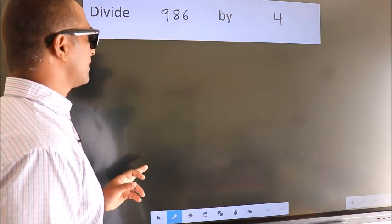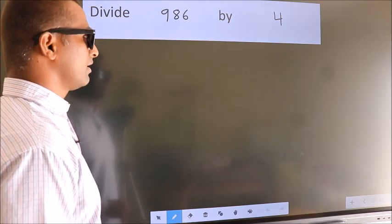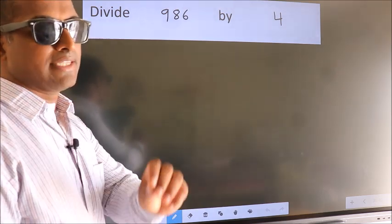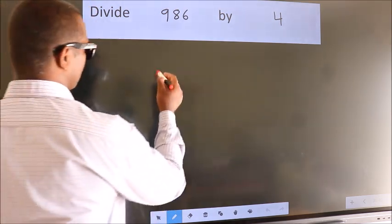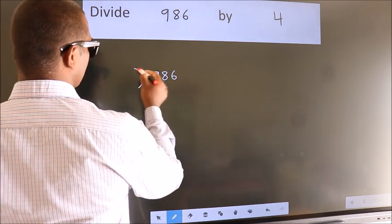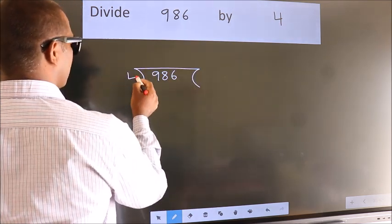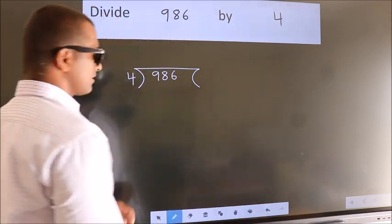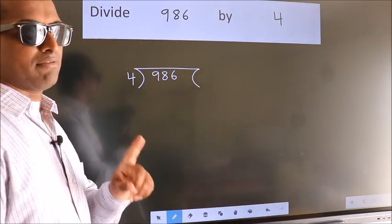Divide 986 by 4. To do this division, we should frame it in this way: 986 here, 4 here. This is your step 1.